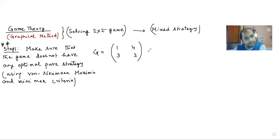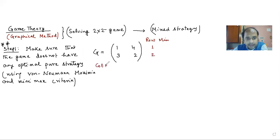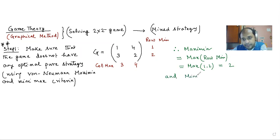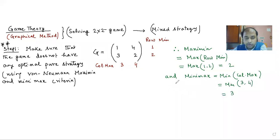So let us find it out. We will calculate the row minimum: for the first row it is one, and for the second row it is two. Column max: for the first column it is three, and for the second column it is four. Therefore, the maximin value will be the max of all row minimums, which is the max of one and two, giving two.